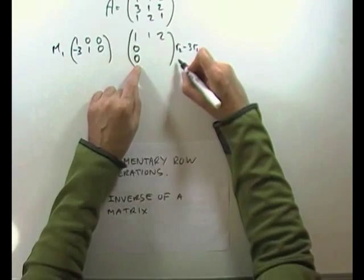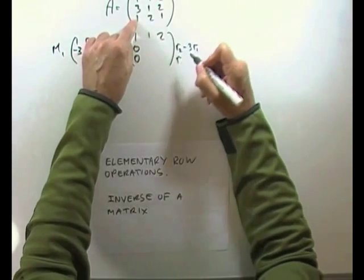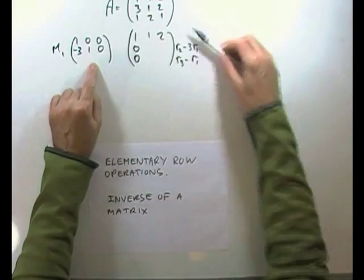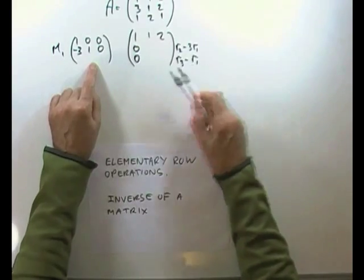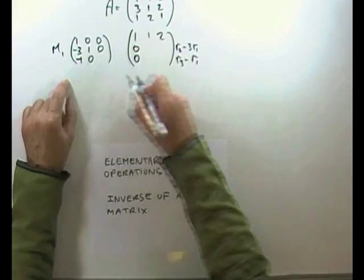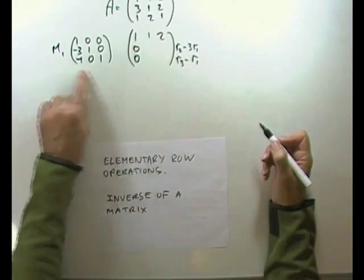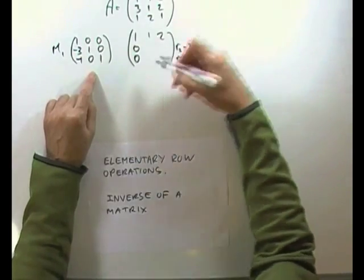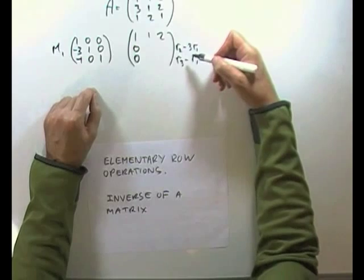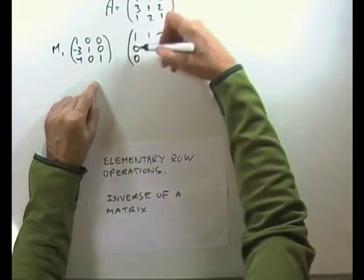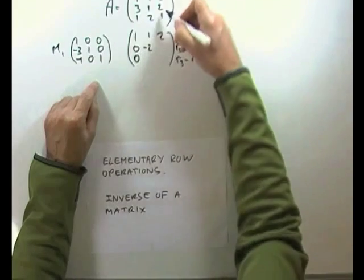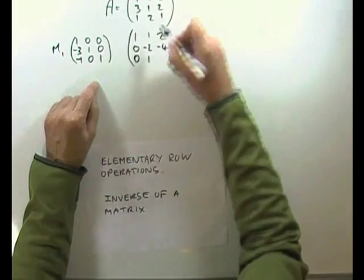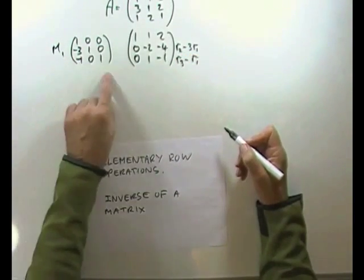Same with the bottom row. If I want to make that a 0, to get that I'll do row 3 take away row 1. The recipe for that in terms of the multiplying matrix to achieve these elementary row operations would be: I'll have negative 1 of row 1, none of row 2, and one of row 3. So that would be the matrix that achieves these elementary row operations. Working it out: 3 take away 3 is 0, 1 take away 3 is negative 2, 2 take away 6 is negative 4. 1 take away 1 is 0, 2 take away 1 is 1, 1 take away 2 is negative 1. That's the matrix that would achieve that.